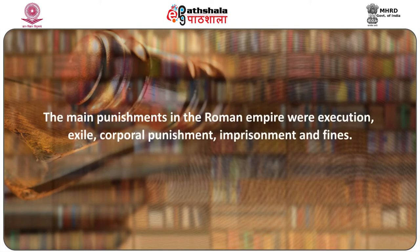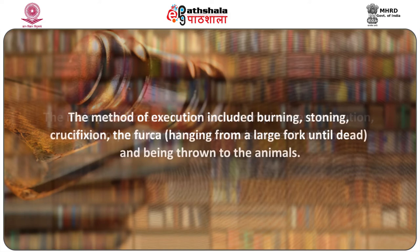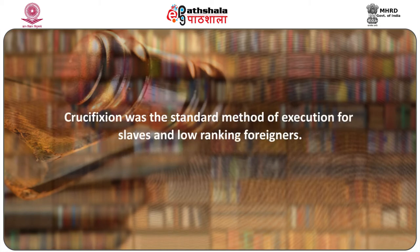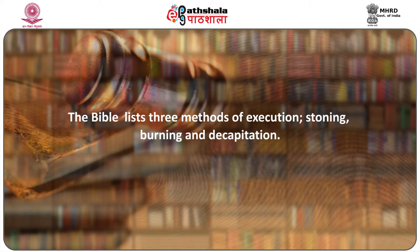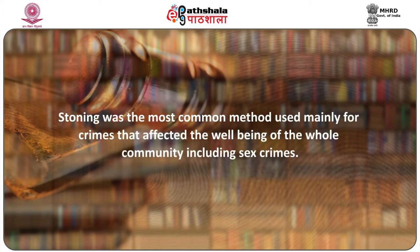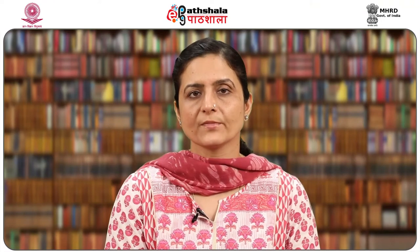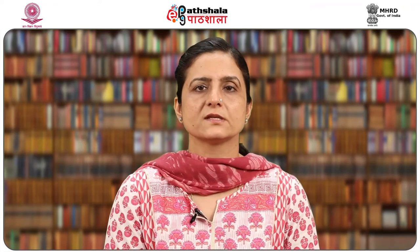The main punishments in the Roman Empire were execution, exile, corporal punishments, imprisonment and fines. Methods of execution included burning, stoning, crucifixion, and hanging from a large fork until death, or persons being thrown to animals. Crucifixion was the method of execution for slaves and low-ranking foreigners. Even the Bible listed three methods of execution: stoning, burning, and decapitation. Stoning was commonly used for crimes affecting the well-being of the whole society, including sex crimes. In Roman law, criminal justice was administered promptly but the history of penal action in the Roman system was highly obscure.